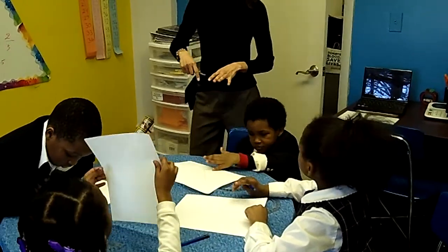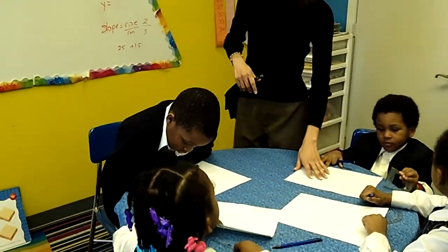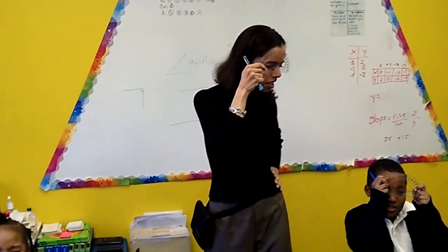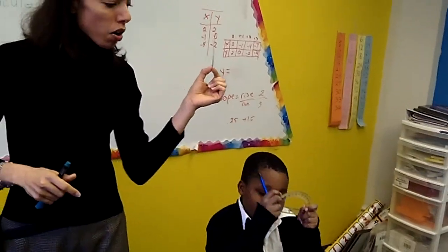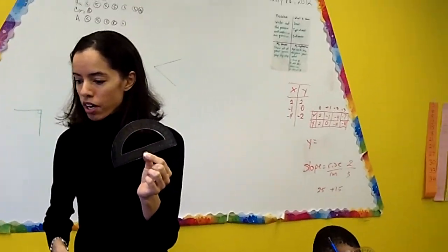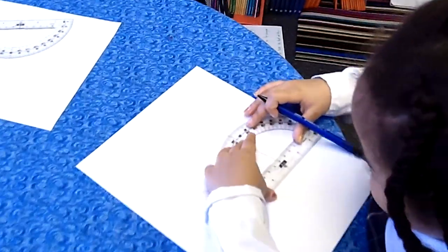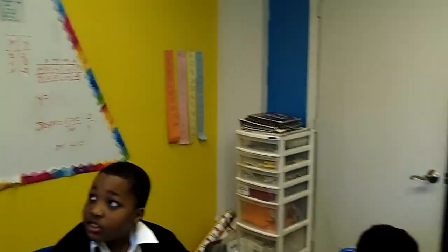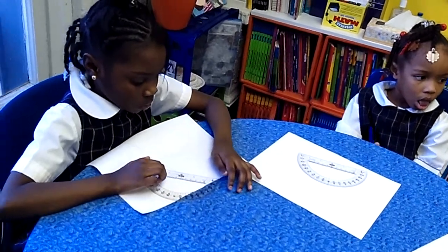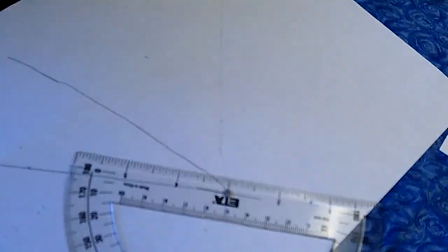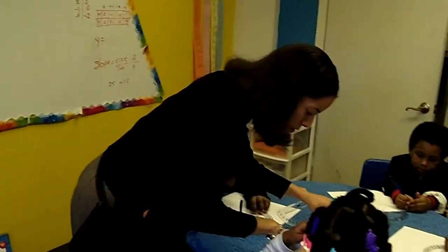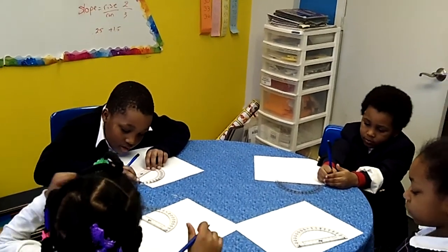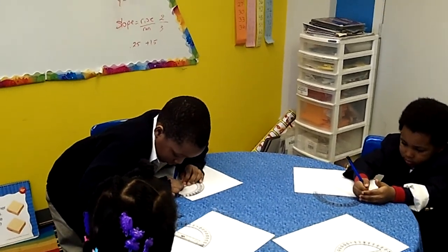We've got our acute angles, and the next thing we're going to do is take your protractor. I want you to hold it up to your face — there's a little peephole in there, see if you can find it. Now that you know where the peephole is, take it and put it on the vertex of your angle. Now that you have it on the vertex, there's a little line underneath the peephole. I want you to put that on top of your line.